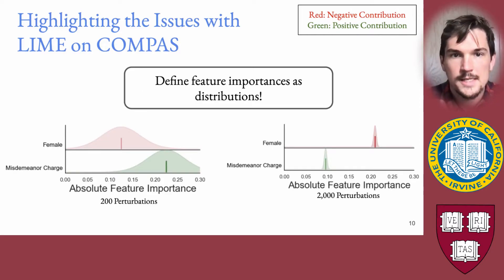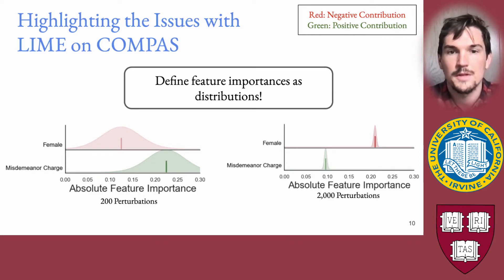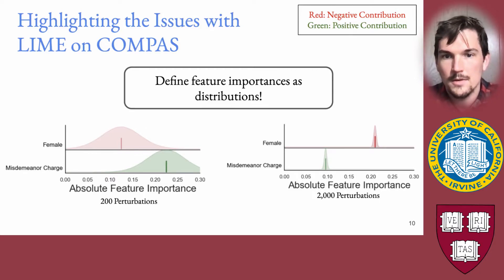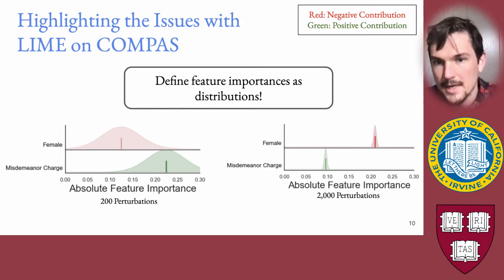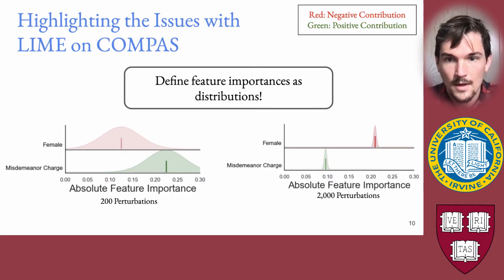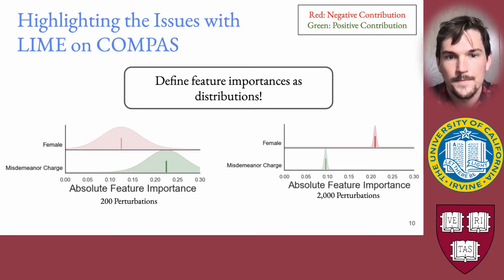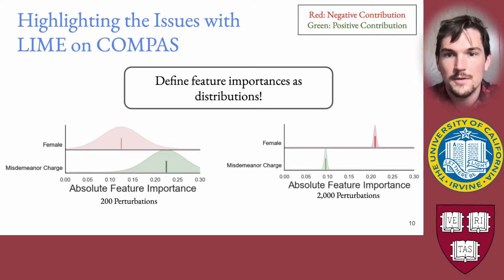Our key insight is that instead of defining feature importances as point estimates, we're going to define them as distributions and recover uncertainty associated with the feature importance estimates. Comparing the left-hand side explanation to the right-hand side: on the left, there's a lot of uncertainty about what the most important feature is, but on the right, we can see that we're highly confident female is the most important feature. This allows us to clearly differentiate cases like this.